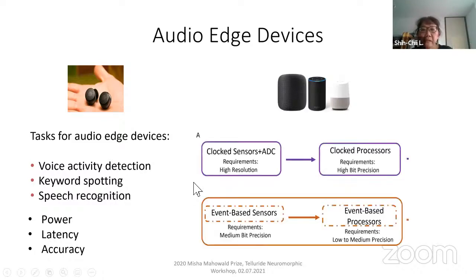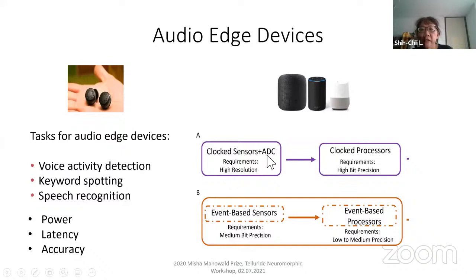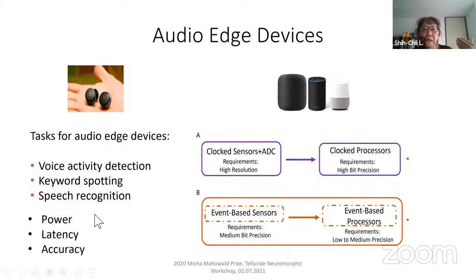We're comparing an event-based sensor going to an event-based processor against the more conventional solution where you have a microphone, an analog-to-digital converter to get samples, and then pass it to a clocked processor. We want to see whether we can still get the same accuracy for less power and lower latency.